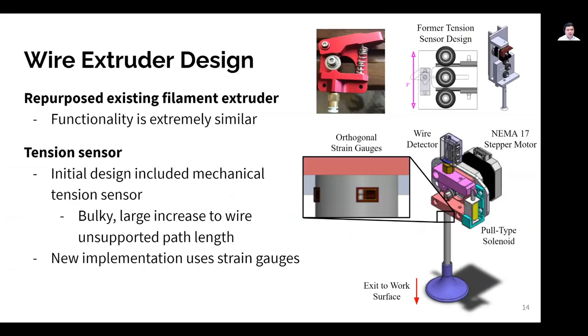So the wire extruder is actually a repurposed filament extruder from a 3D printer, and the functionality is extremely similar. The wire extruder serves to lay down the wire into the work space. One difference between these two devices is the addition of a tension sensor on our machine, designed to get the tension of the wire during routing in order to implement feedback control.